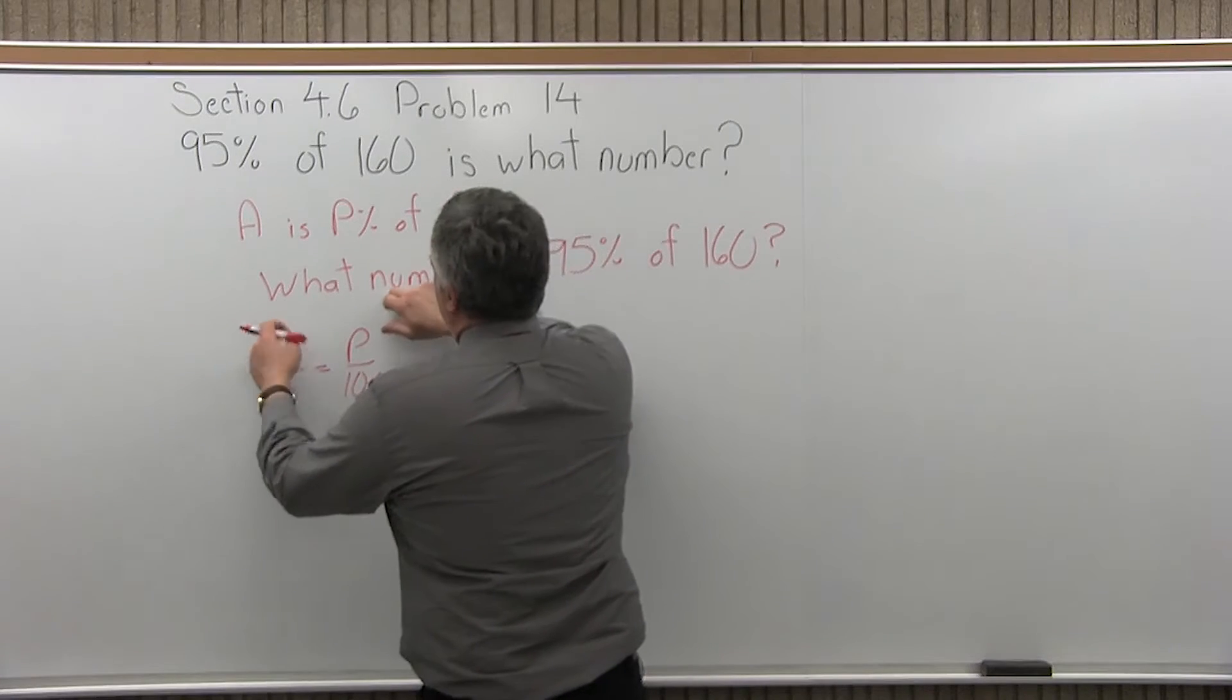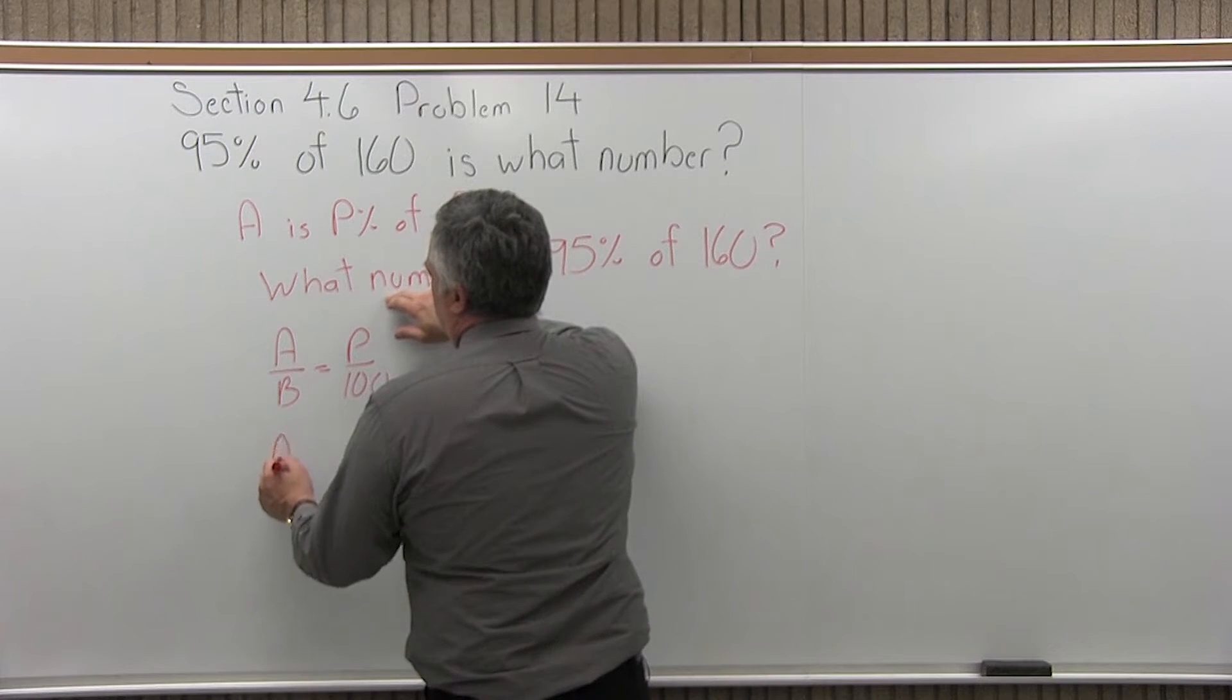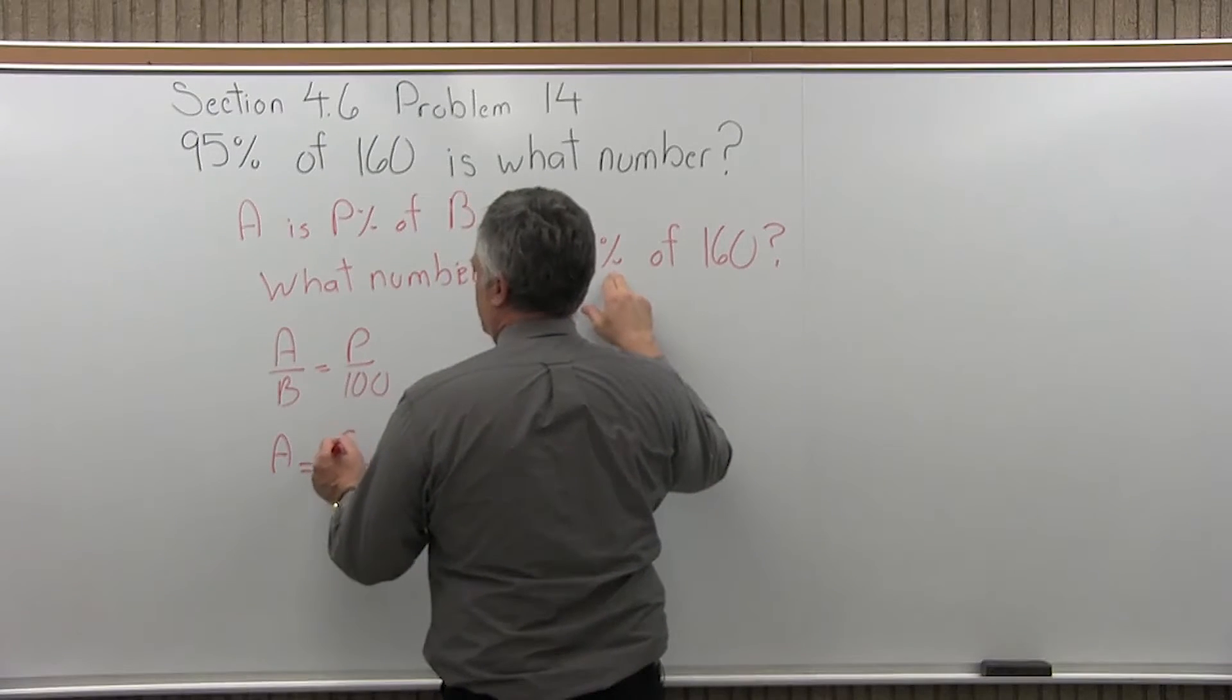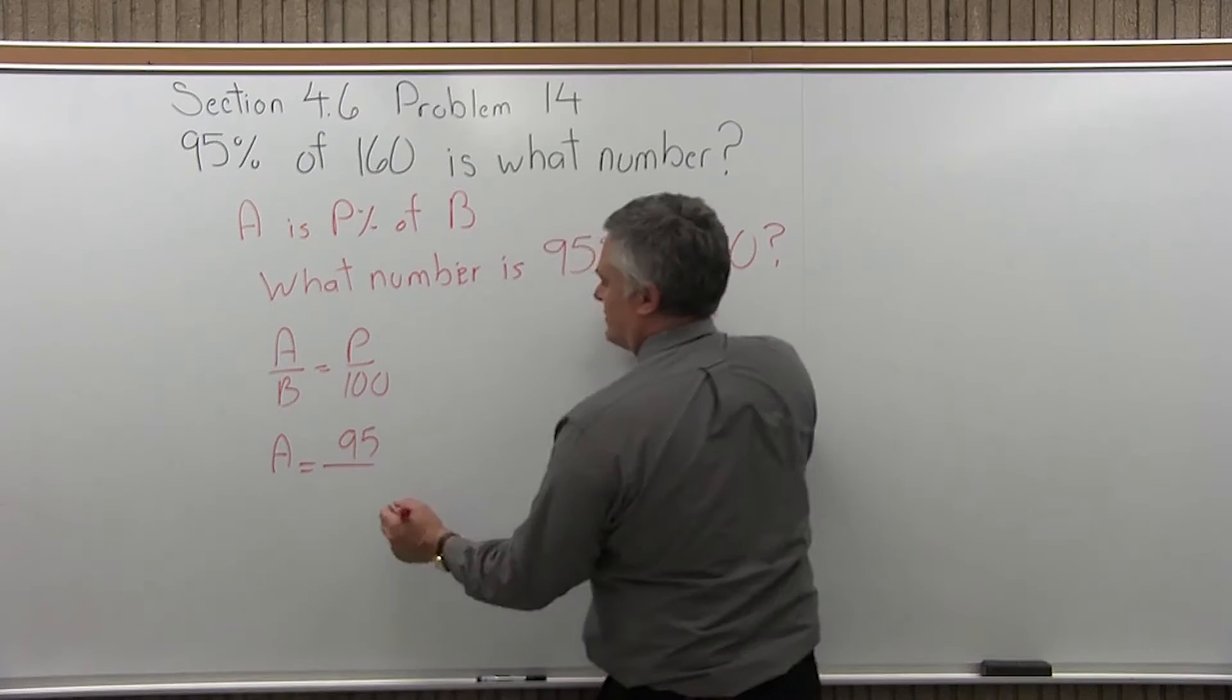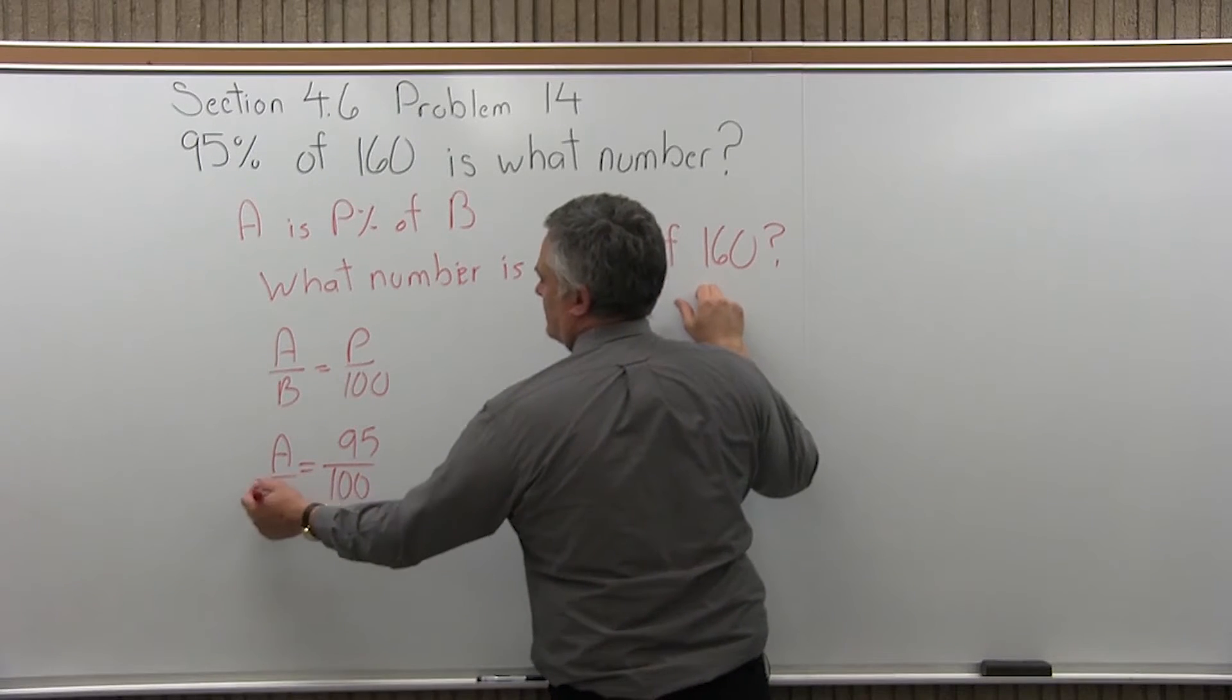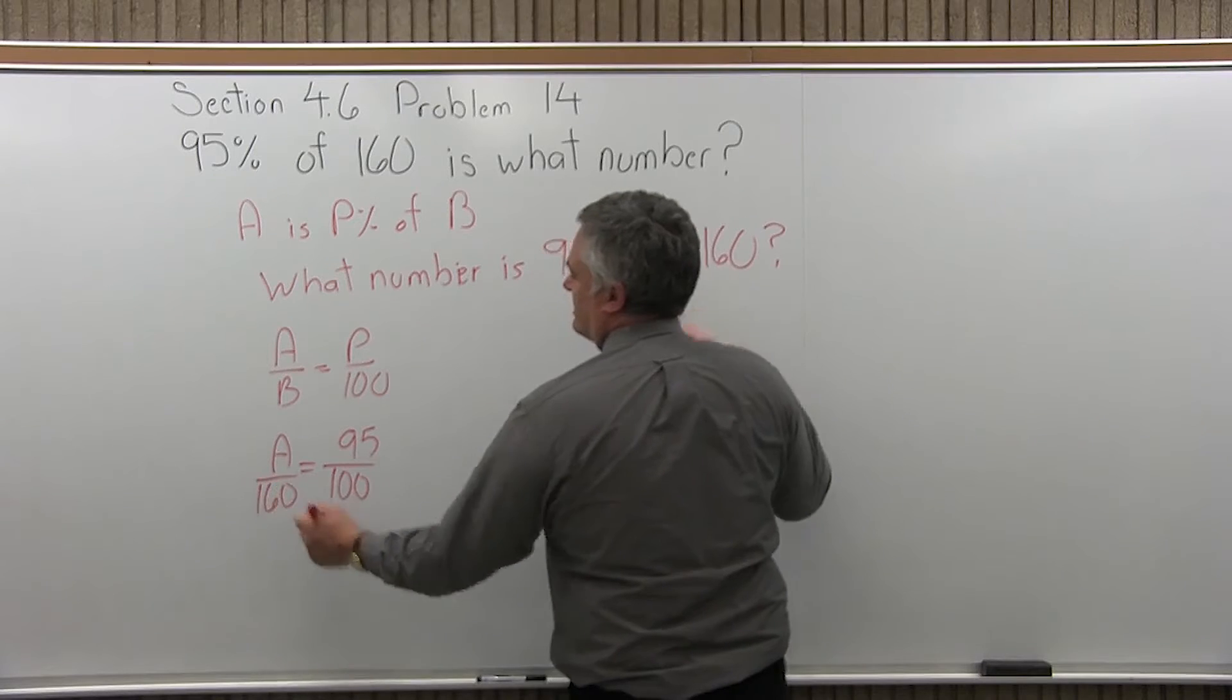So A is the unknown, so it will stay a variable. A is P percent, so P is 95, and percent goes in as 100, of 160. So the 160 goes under the A.